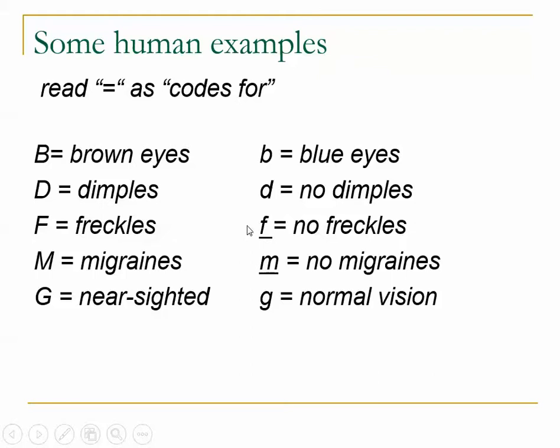Do any of you get migraine headaches? Not everybody can get migraine headaches — you have to have the gene that codes for the ability to get them. So you can thank either mom or dad for giving you the dominant gene for migraines, and because it's dominant, you only need one of them. And unfortunately, the gene for nearsightedness in humans is dominant over the gene for normal vision.